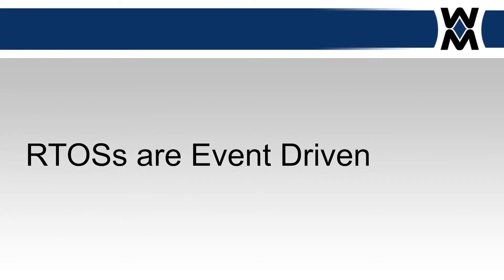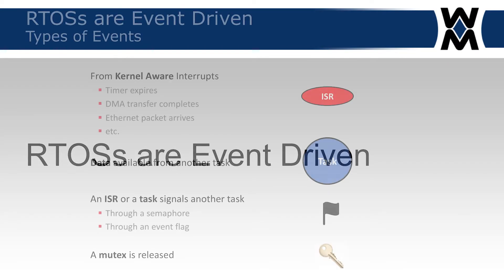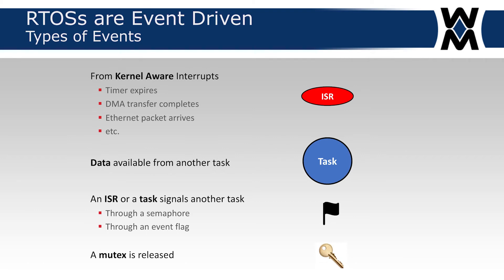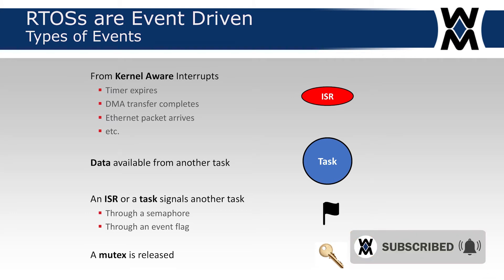RTOSs are event-driven. Every task waits for an event to occur, and an event occurs typically from what's called a kernel-aware interrupt — an interrupt service routine that is aware about the existence of a kernel, or in other words, an RTOS. A timer expires, generates an interrupt, signals the task, wakes up the task.